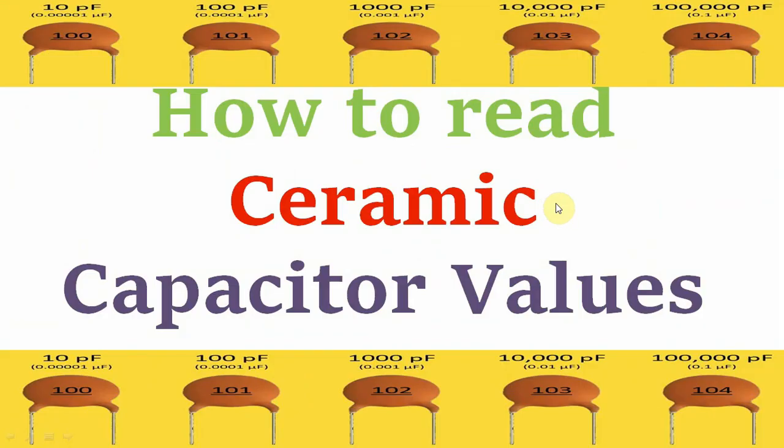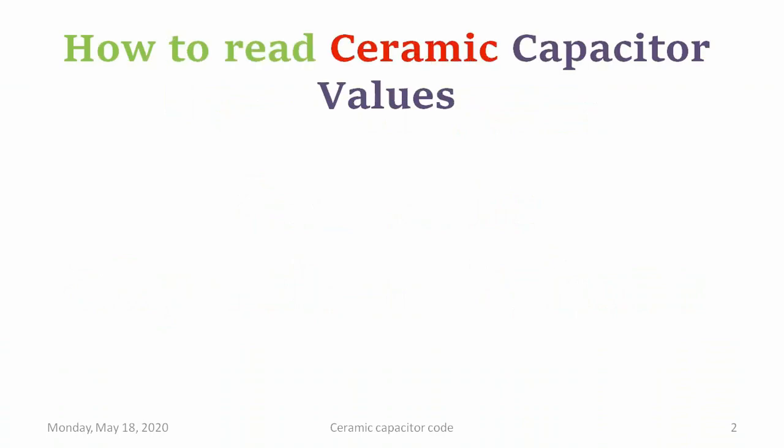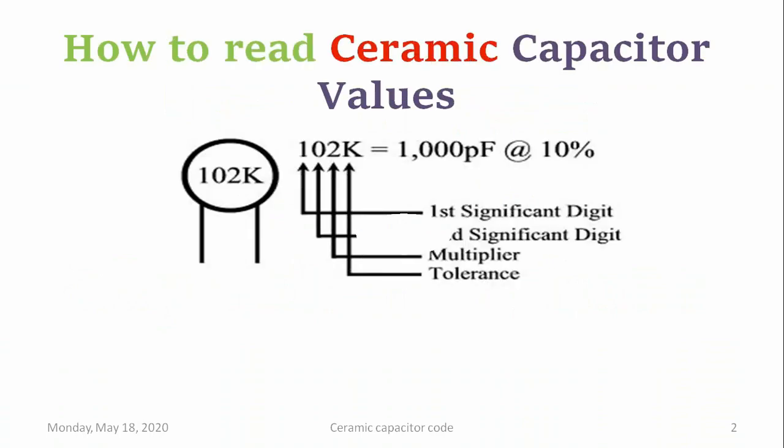Hello friends, today I will explain how to read a ceramic capacitor value. Let us take an example — assume that we have a ceramic capacitor on which the value is written as 102 K. What exactly do these four digits stand for?